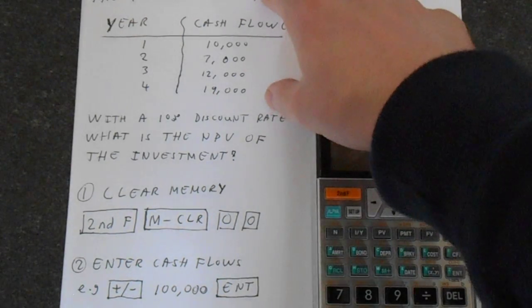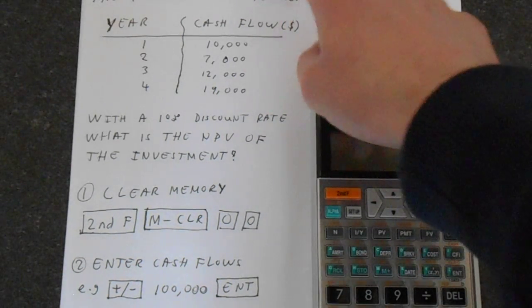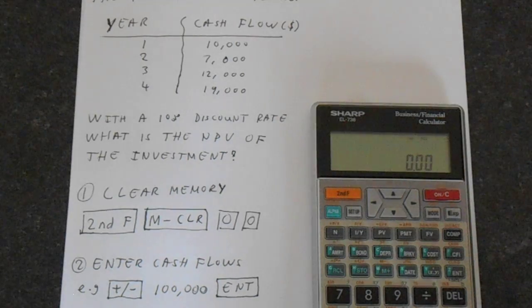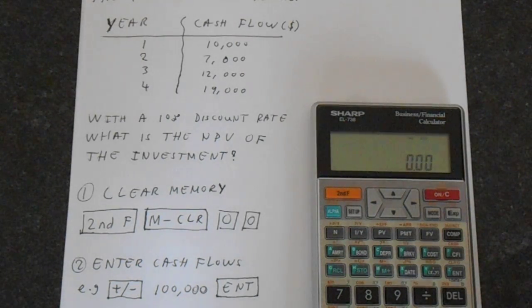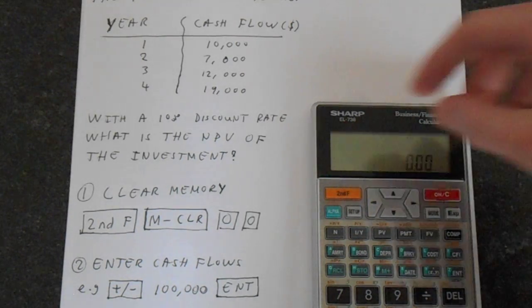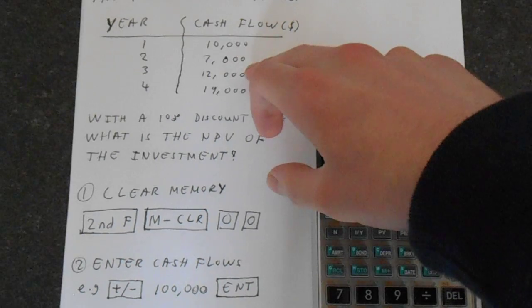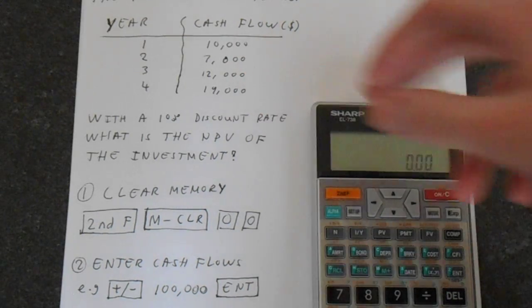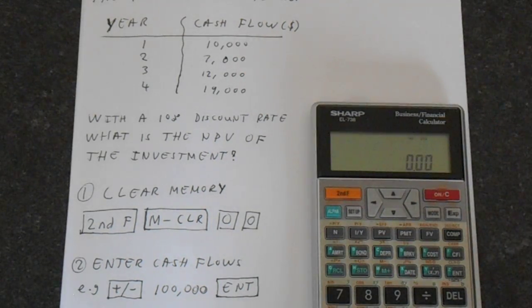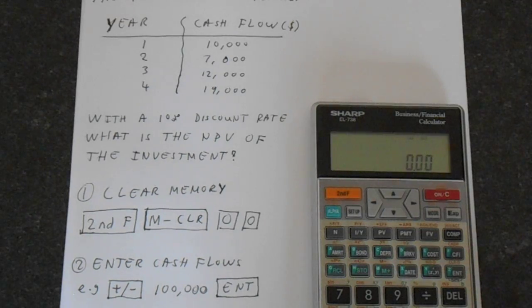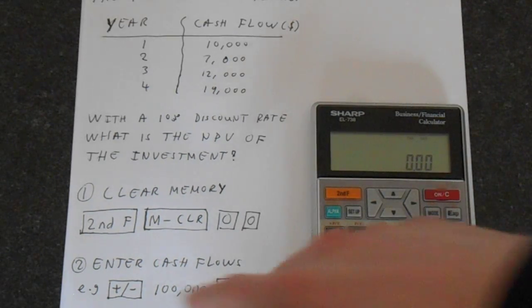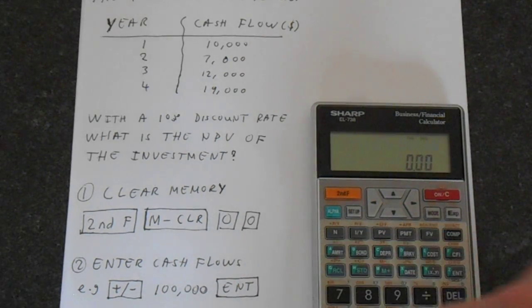Now we need to enter the cash flows with the cash flow convention. The $100,000 investment is a negative cash flow — the cash is going away from us. The cash flows we receive are coming to us, so we make those positive. Going away is negative, coming to you is positive.